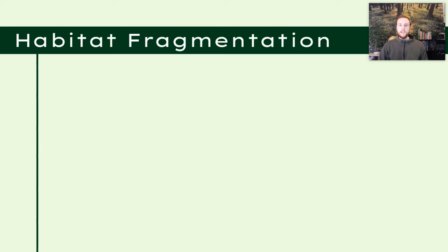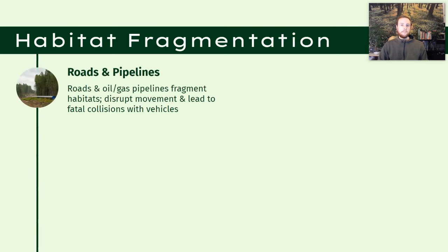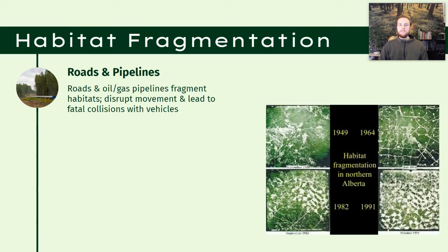Now let's look at habitat fragmentation. One cause is roads and pipelines. When we drill for oil, we have to transport it, usually through huge networks of pipelines. We also need roads for transporting people and goods. Both of these factors fragment habitat — they divide sections of what used to be continuous forest or prairie into smaller subsections. We can see a great example of this from aerial footage of Alberta, Canada, where there's a lot of oil extraction, chopping continuous forest ecosystem into fragmented tiny pieces.